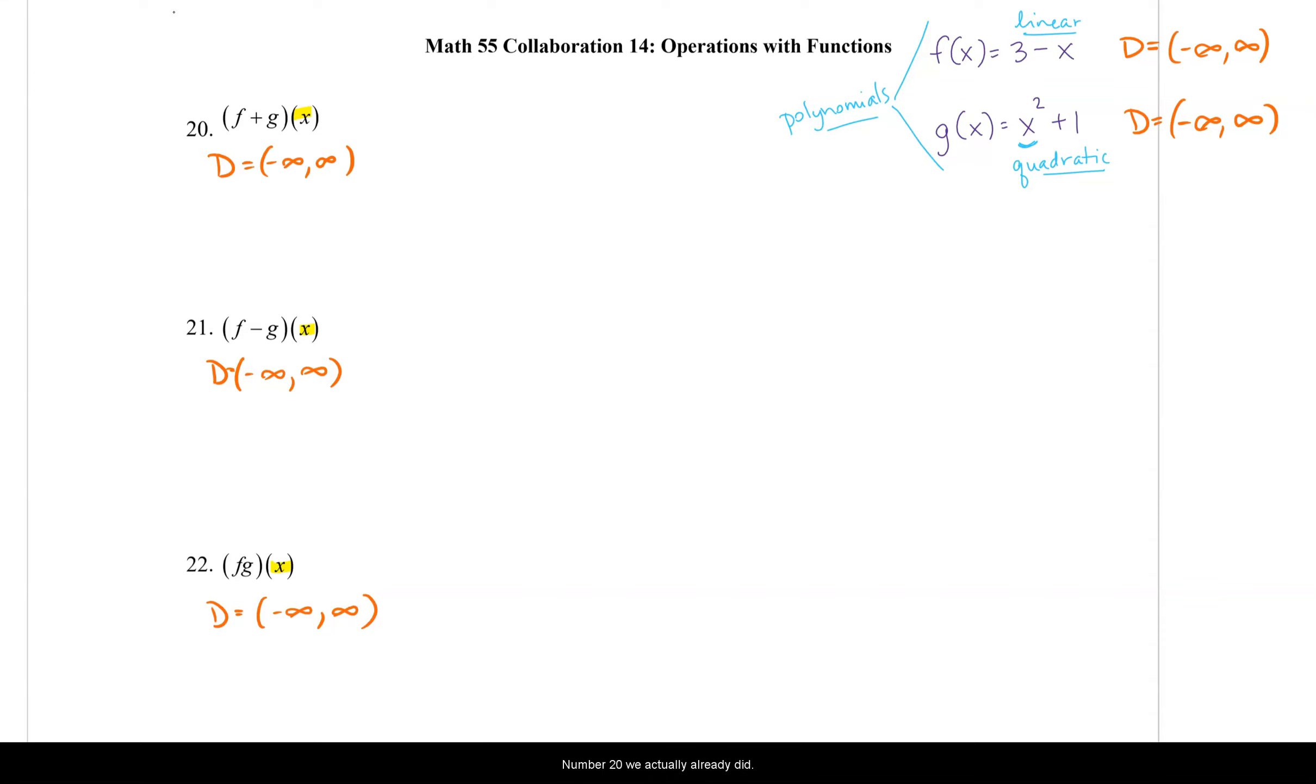Number 20 we actually already did in that problem above. f plus g of x is x squared minus x plus 4. We did that above. So I won't recreate that problem for you. Taking a look at the subtraction though, this is good to see.